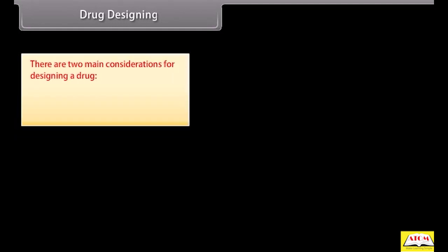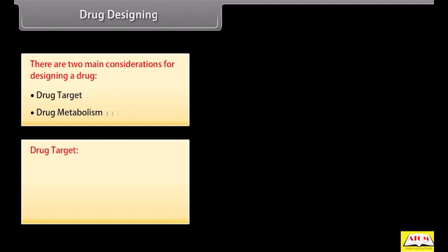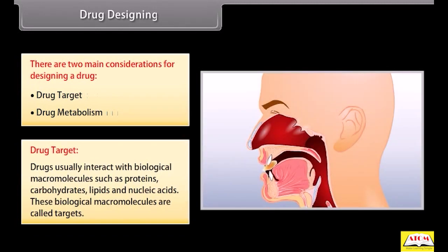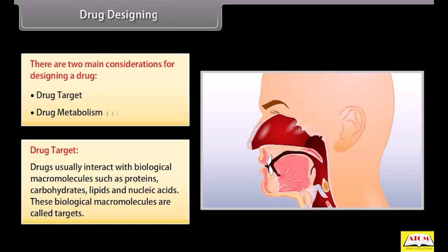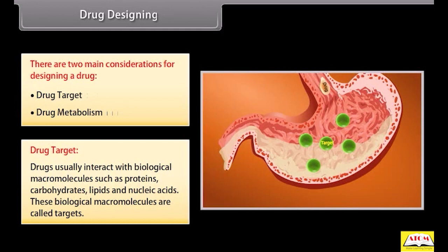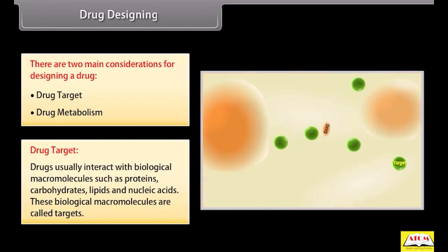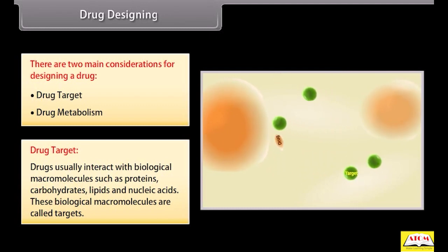There are two main considerations for designing a drug: drug target and drug metabolism. Drugs usually interact with biological macromolecules such as proteins, carbohydrates, lipids and nucleic acids — these biological macromolecules are called targets. The correct choice of drug target is important to obtain good therapeutic effects of a drug.